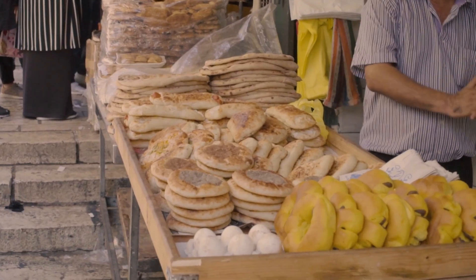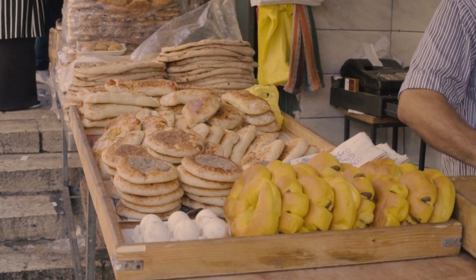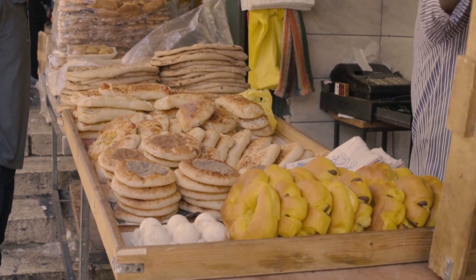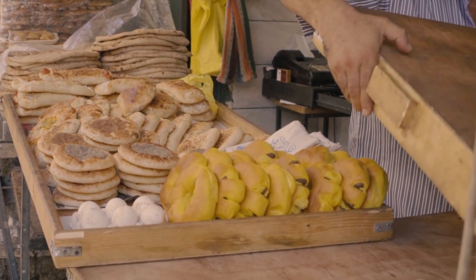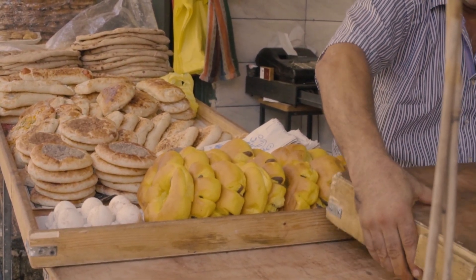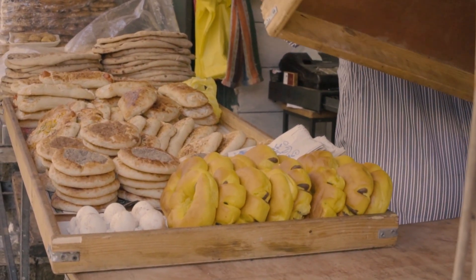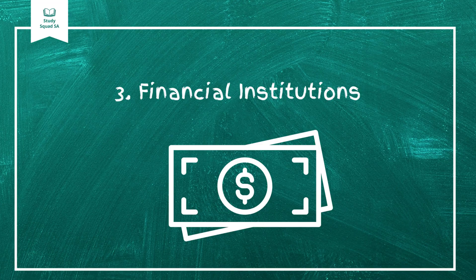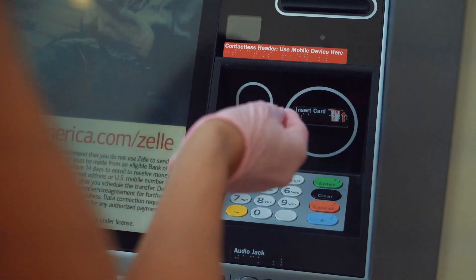Number two: businesses. Businesses are the producers of goods and services. They rely on the labor provided by households to function. Think of your favorite bakery — they hire bakers to produce delicious bread and pastries. You buy those pastries, and the money you spend becomes the bakery's revenue. It's a win-win.